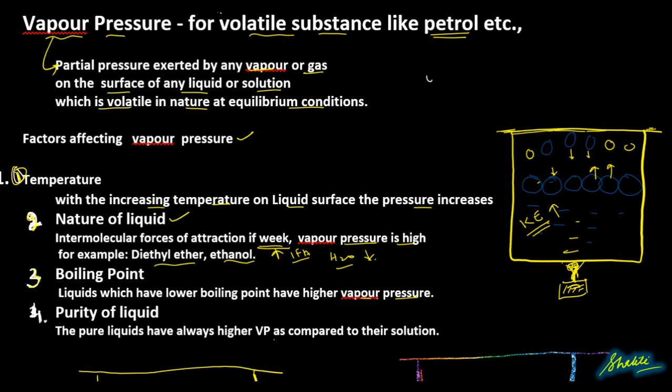The third factor is boiling point. Liquids which have lower boiling point have higher vapor pressure. Liquids that boil at lower temperatures naturally have higher vapor pressure, and those that boil slowly have lower vapor pressure. The fourth factor is purity of liquids — pure liquids have higher vapor pressure as compared to their solutions.